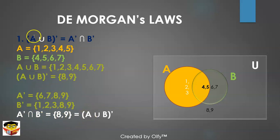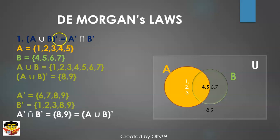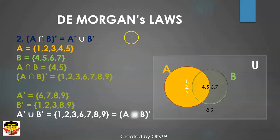This proves the first statement of DeMorgan's laws: (A∪B)' = A' ∩ B'. Now let's prove the second statement, which is (A∩B)' = A' ∪ B'.